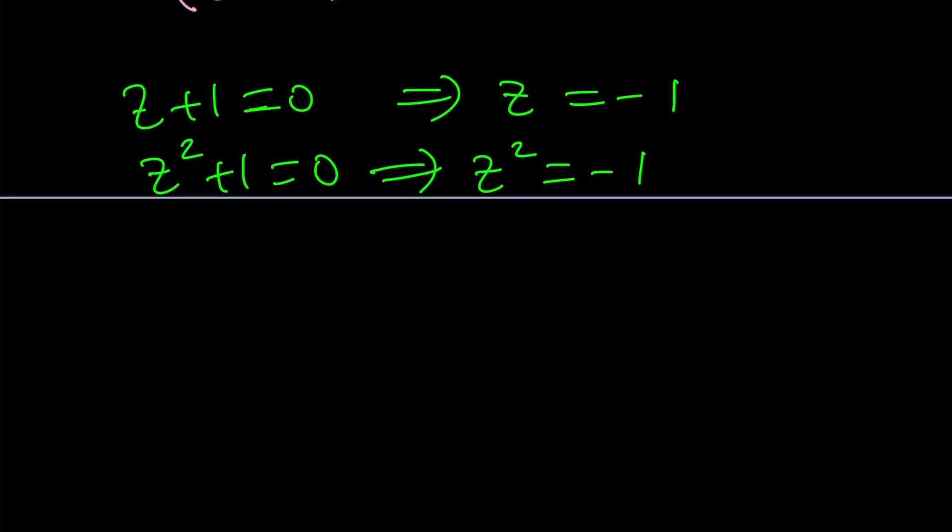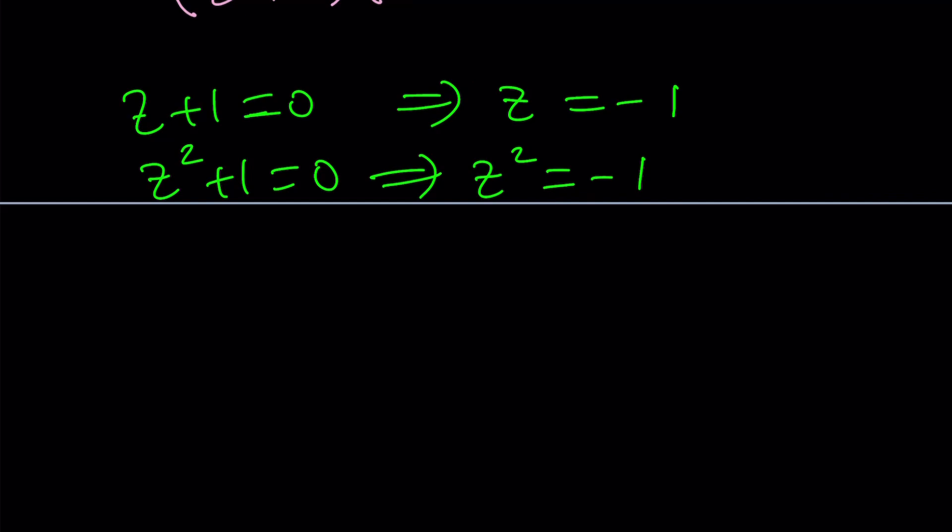If z plus 1 is equal to 0 we're going to get z equals negative 1 and if z squared plus 1 is equal to 0 then z squared equals negative 1. Remember the number or the numbers whose square equals negative 1 and that will be i. Right? The infamous imaginary number.